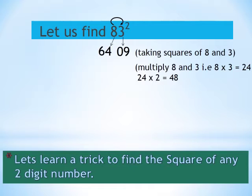So here we get 24 into 2 which is 48. Now let us write the number 48 below 6409 in such a way that the units place is blank.